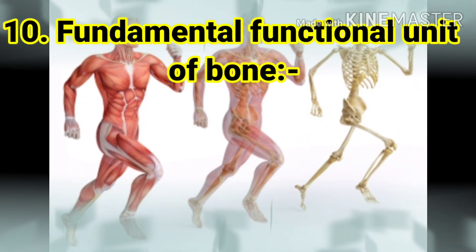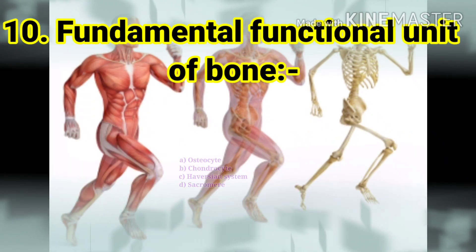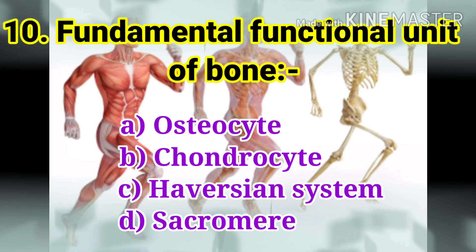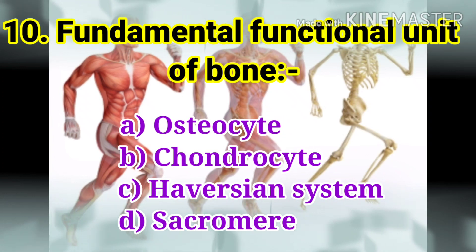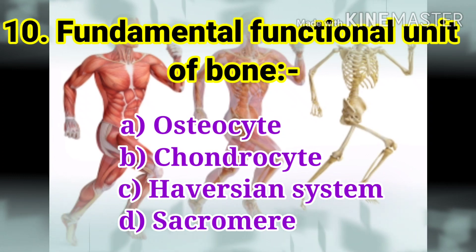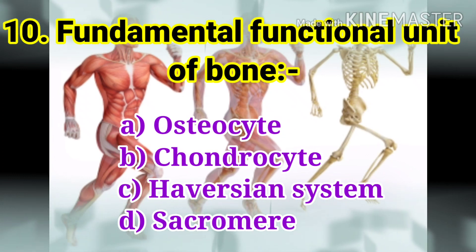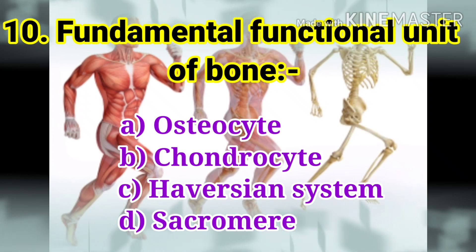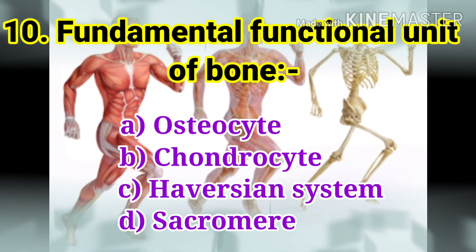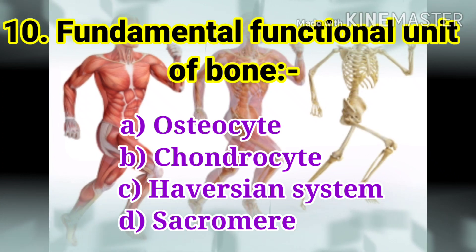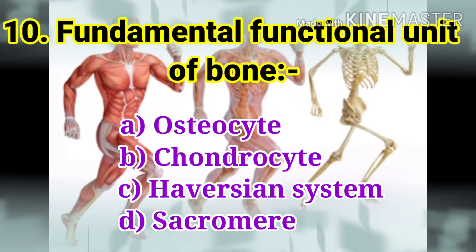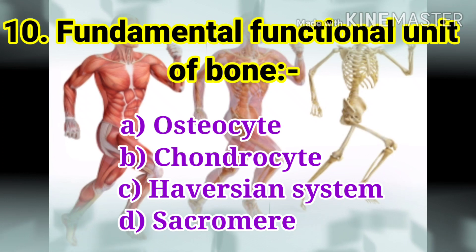The next question: fundamental functional unit of bone. The options are osteocytes, chondrocyte, Haversian system, and sarcomere.